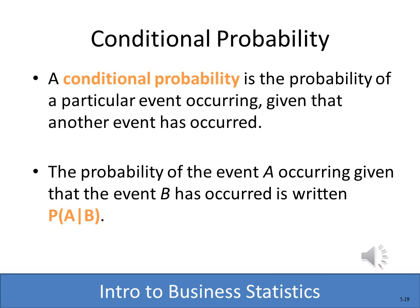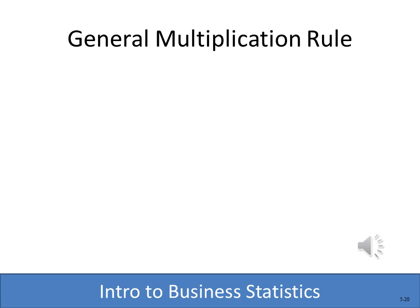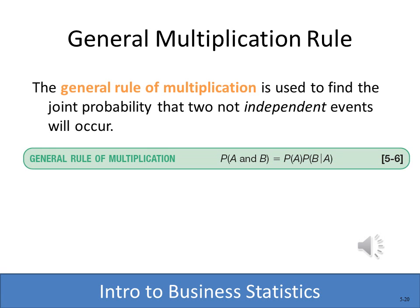Now we're moving into conditional probability. Conditional probability is the probability that a particular event occurs given that another event has already occurred. The probability of event A occurring given that event B has already occurred is written as P(A|B), where the vertical line stands for 'given that.' We use the general rule of multiplication to find the joint probability between two non-independent events: P(A and B) = P(A) × P(B|A).